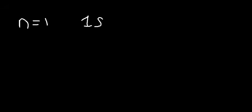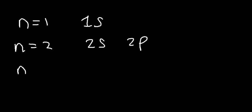Some things you need to know: the number of energy levels is equal to the number of sublevels. So when N is 1, you only have one sublevel — S. When N is 2, you have two sublevels: S and P. When N is 3, you have three sublevels: 3S, 3P, and 3D.